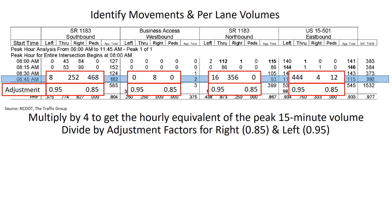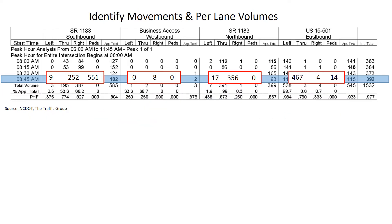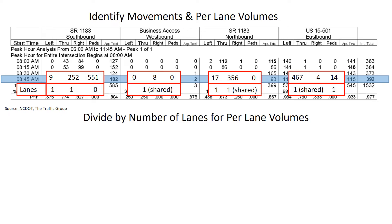We're going to go across the row again doing those divisions, and we'll end up with these adjusted volumes to carry forward to our next step, which is to divide by the number of lanes to get per-lane volumes. We take the hourly equivalent volumes after adjusting for left and right turns and now divide by the number of lanes.